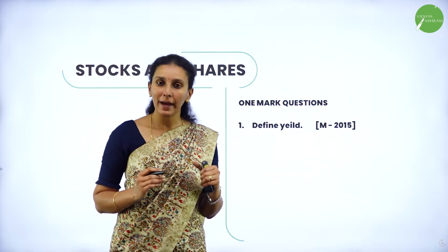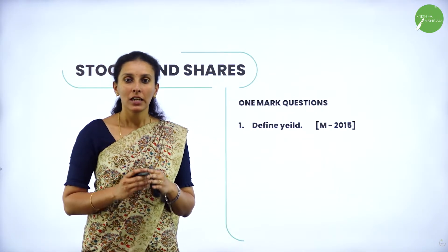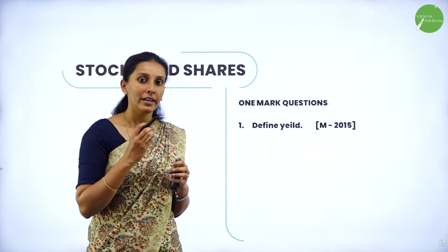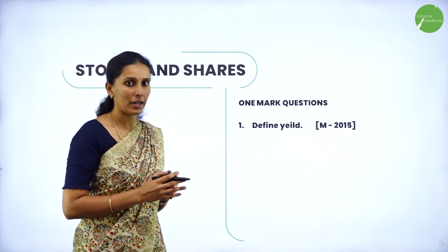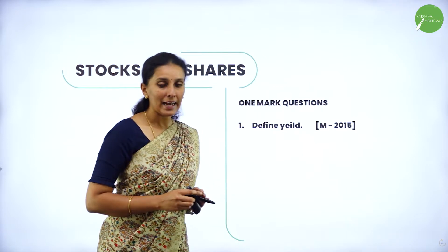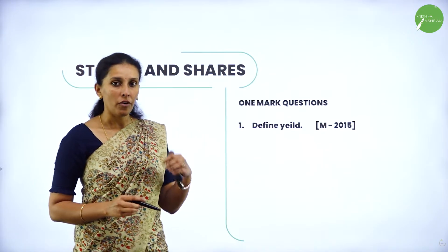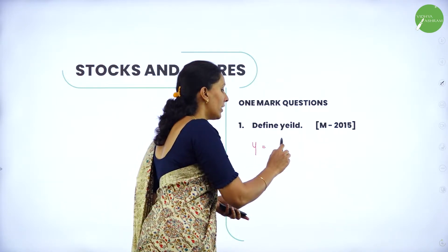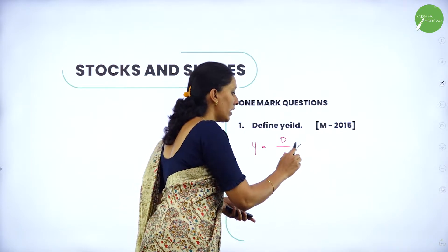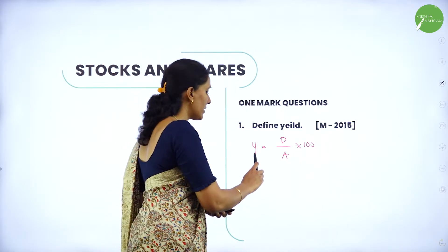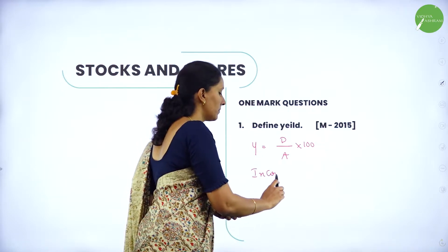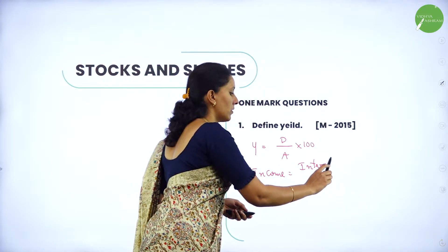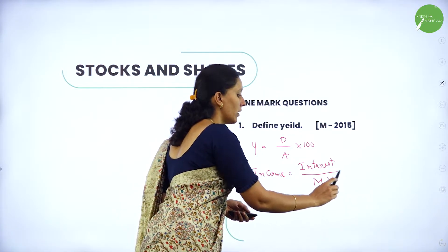The first 1-mark question: define yield. Yield is the actual income on investment — that is, how much dividend or income you receive for the given market value. Yield is given by the formula: yield = dividend / amount × 100, or in other words, income = interest / market value × 100.